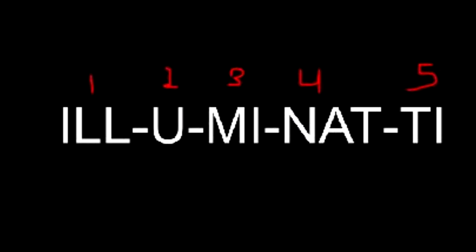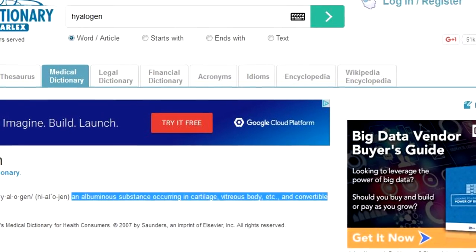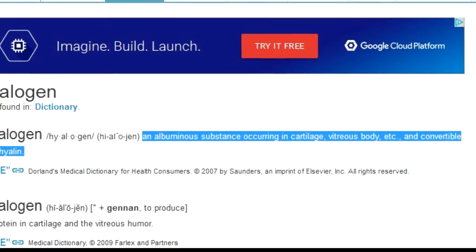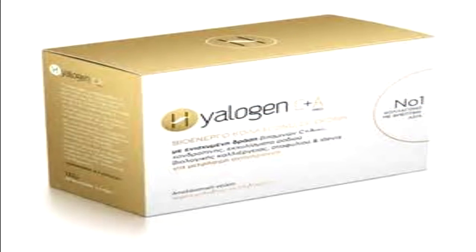Illuminati has five syllables. Three plus five is eight. The word hyalogen has eight letters, because a hyalogen is an albuminous substance occurring in cartilage, vitreous body, etc., and convertible into hyaline.